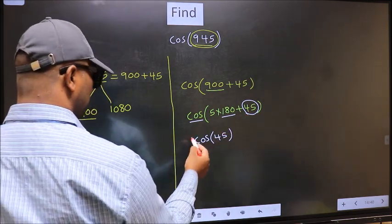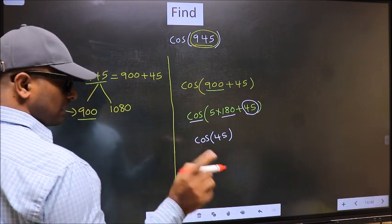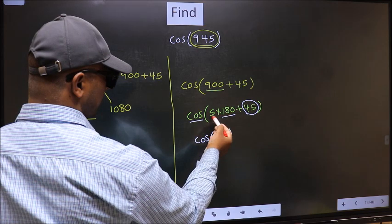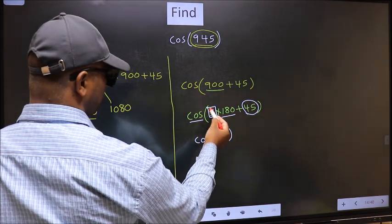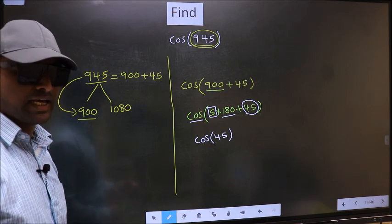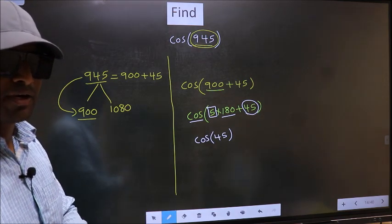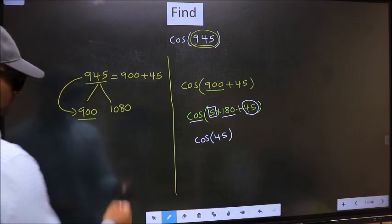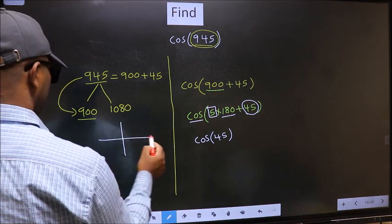Now the question is: will we get here plus or minus? To answer that, we should look at the number before 180, that is 5. And 5 is odd, and all the odd multiples of 180 lie either in the second or in the third quadrant.